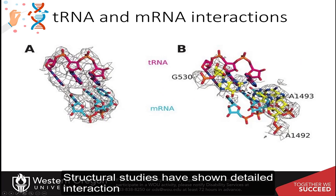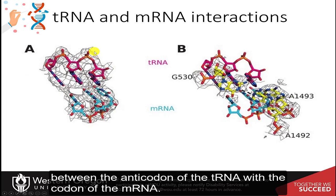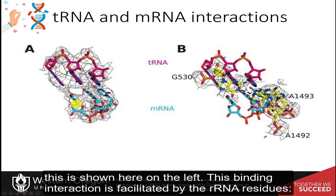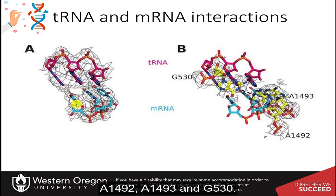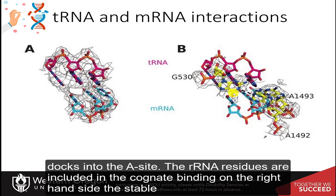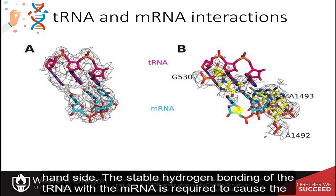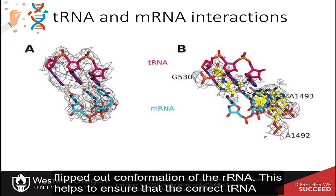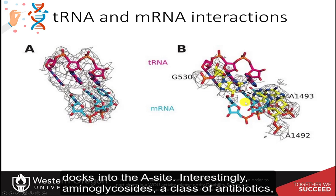Structural studies have shown detailed interaction between the anticodon of the tRNA with the codon of the messenger RNA. This binding interaction is facilitated by the ribosomal RNA residues A1492, A1493, and G530, which can shift and adopt a flipped-out conformation. When a cognate tRNA docks into the A site, these rRNA residues are involved in cognate binding. The stable hydrogen bonding of the tRNA with the messenger RNA is required to cause the flipped-out conformation of the ribosomal RNA, helping to ensure that the correct tRNA docks into the A site.